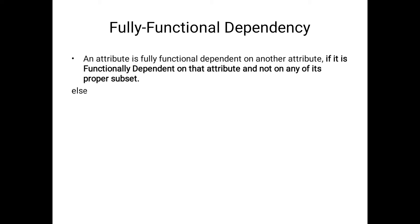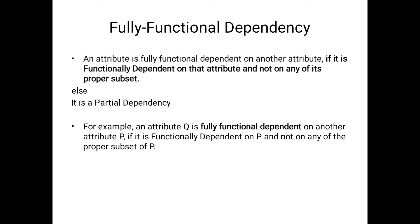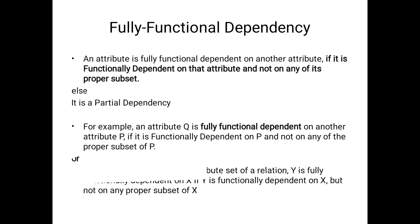Now we will see fully functional dependency. If we consider one functional dependency — LHS implies RHS — we say it is fully functional dependent if the RHS does not depend on any proper subset of the LHS.